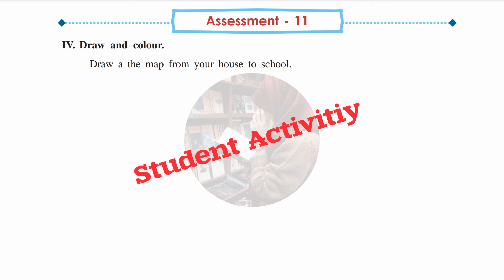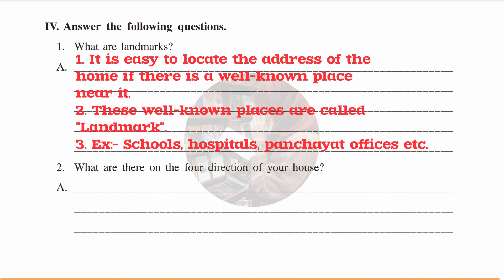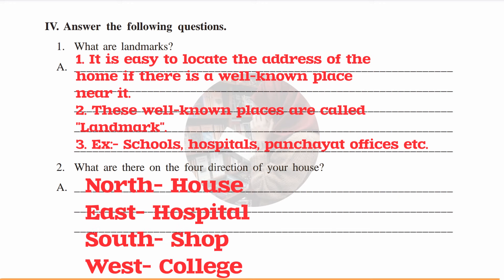Final questions: First — what are landmarks? Answer in three points: it is easy to locate the address of a home if there is a well-known place near it; these well-known places are called landmarks; examples are schools, hospitals, panchayat offices, etc. Second — what are there on the four directions of your house? Answer: north — house, east — hospital, south — shop, west — college.